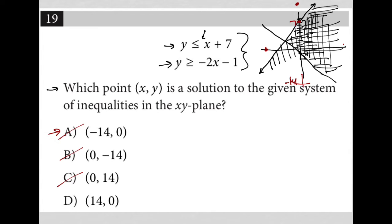How about 14, 0? That's going to be on the x-axis over here, absolutely, definitely in the overlapping range here. So choice D must be the correct answer, and I did that fully visually.